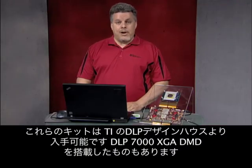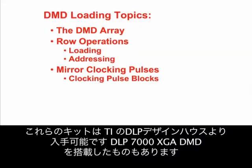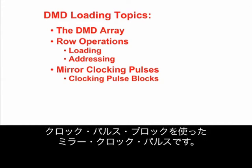These kits are available from our DLP Design House partners and are also available with the DLP 7000 XGA DMD. The topics we will cover today are the DMD array, row operations — both loading and addressing — and mirror clocking pulses using clocking pulse blocks.